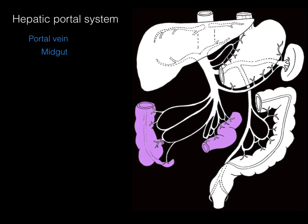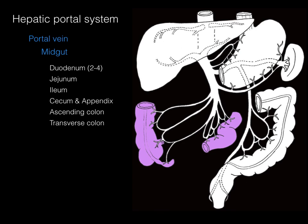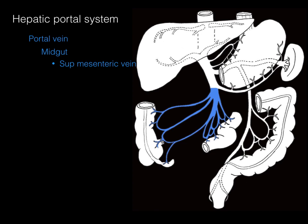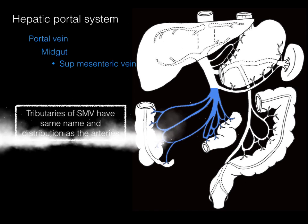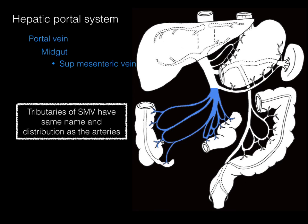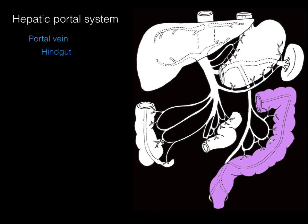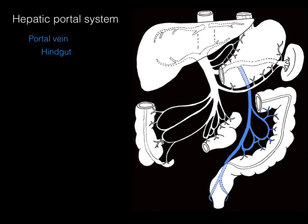The midgut is comprised of the second, third, and fourth parts of the duodenum, the jejunum, ileum, cecum and appendix, ascending colon, and part of the transverse colon. The superior mesenteric vein drains the midgut, and its tributaries have the same names and distributions as the arteries. The hindgut is comprised of the transverse colon, descending colon, sigmoid colon, and rectum. The portal vein drains the hindgut via the inferior mesenteric vein, which drains into the splenic vein, which then goes into the portal vein and into the liver.